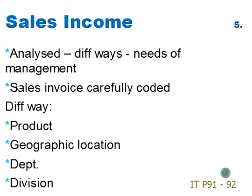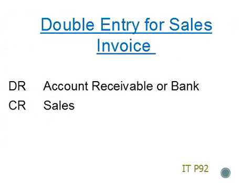Section 5. The sales income of a business can be analyzed in a number of different ways according to the needs of management. However the sales income is analyzed, the sales invoice needs to be carefully coded. The possible different ways are: by product, by geographic location, by department, or by division. The double entry, once the sales invoice has been correctly coded, will be: debit accounts receivable or bank, and credit sales.